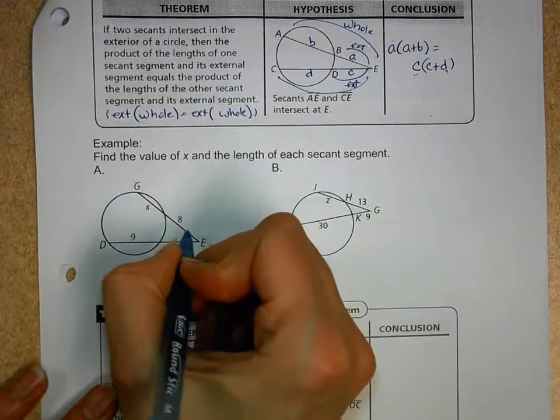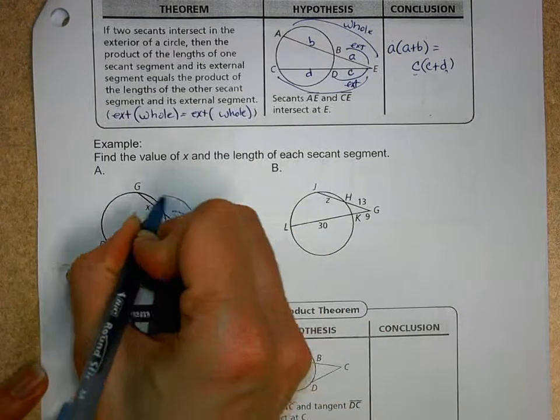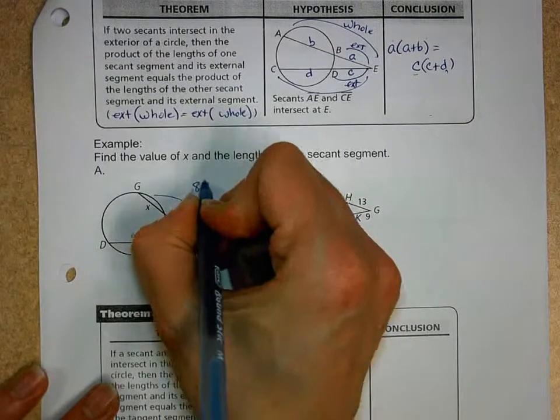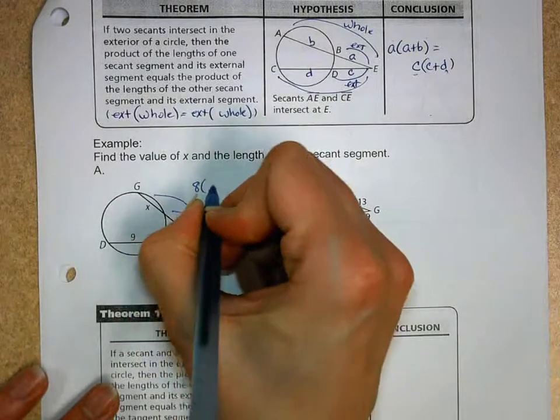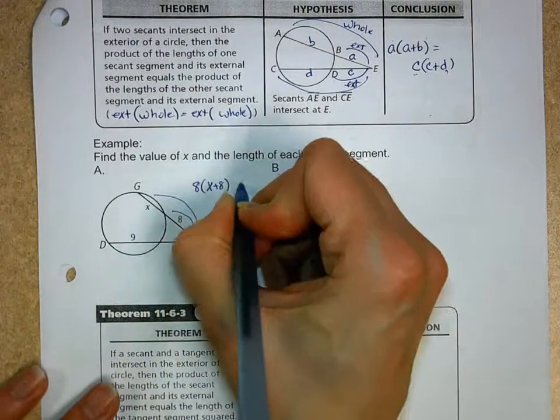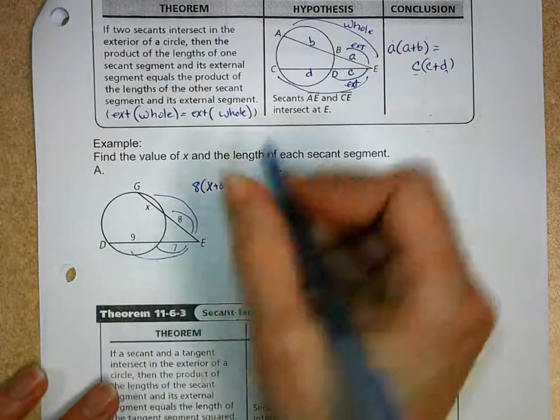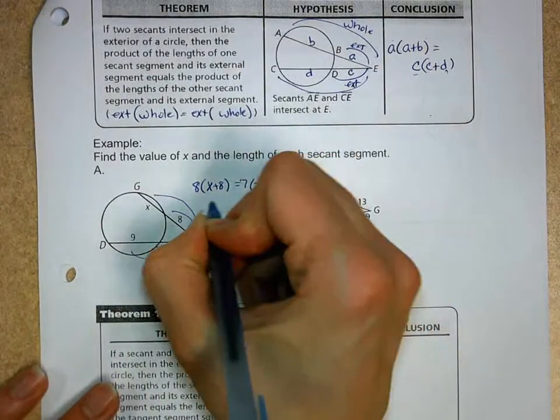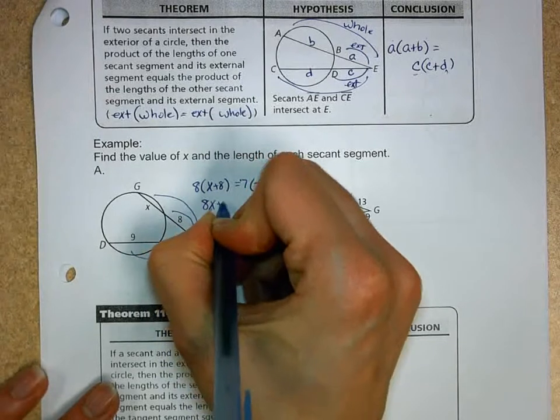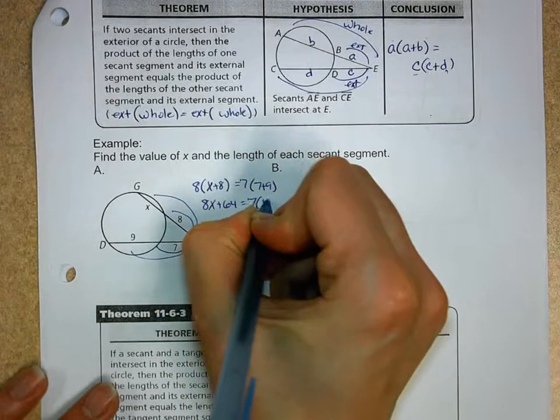Find the value of X and the length of each secant segment. So on this one, I think, again, exterior times the length of the whole thing. So we got 8 times the whole thing, which is going to be X plus 8, equals the exterior which is 7 times the length of the whole thing, which is 7 plus 9, which is 16.